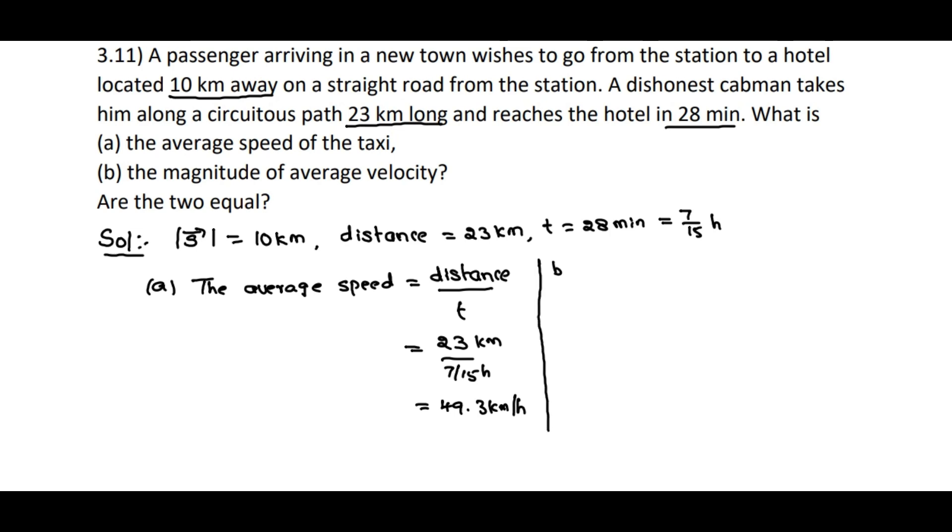For part B, the magnitude of average velocity equals the magnitude of displacement divided by time taken. Here, the displacement magnitude is 10 kilometers and time taken is 7/15 hour. After simplification, we get 21.43 kilometers per hour.